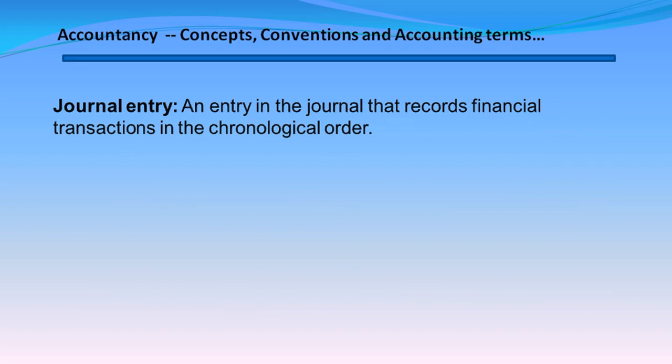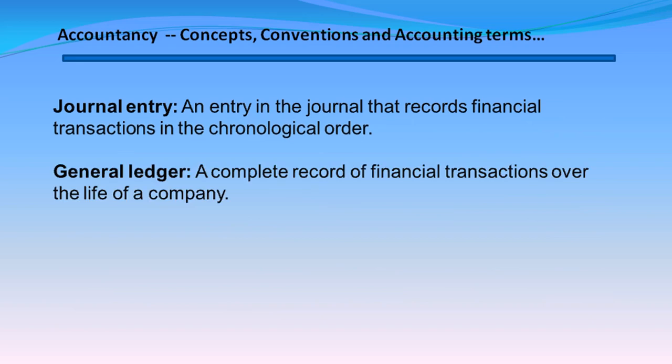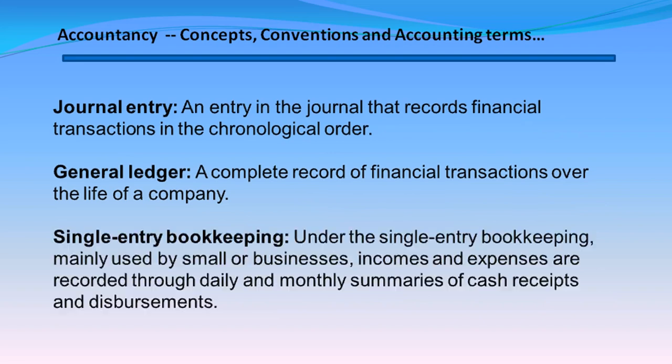Journal Entry is an entry in the journal that records financial transactions in chronological order. General Ledger is a complete record of financial transactions over the life of a company. Under Single Entry Bookkeeping, mainly used by small businesses, income and expenses are recorded through daily and monthly summaries of cash receipts and disbursements.